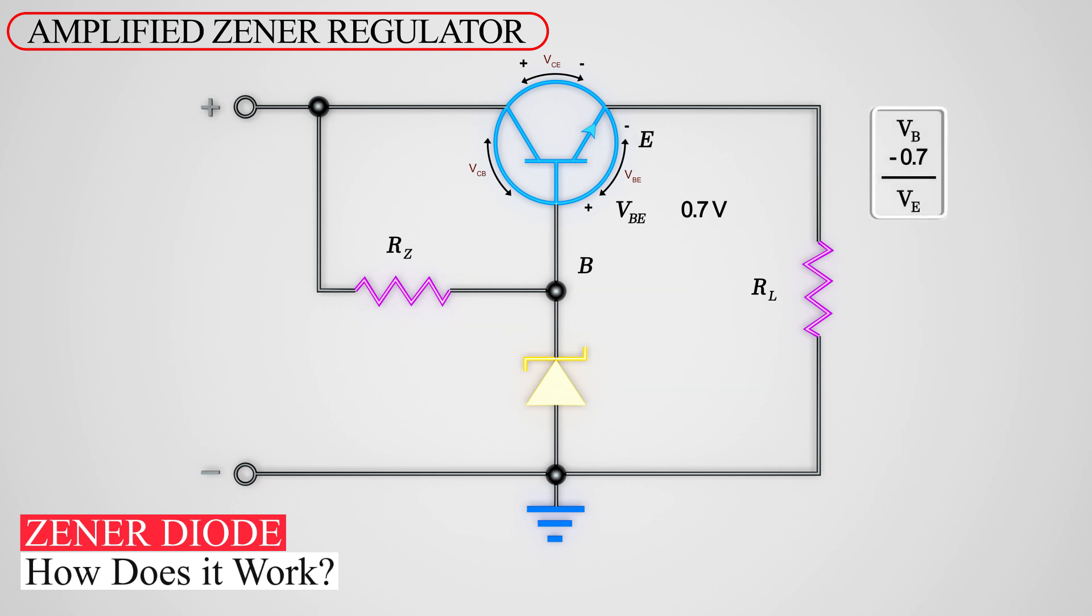Now, if we change the Zener value, observe how the transistor drops the value down by 0.7 volts. So at the emitter and the RL load resistor, we see a voltage that is 0.7 volts less than what the Zener diode permits at the transistor base.